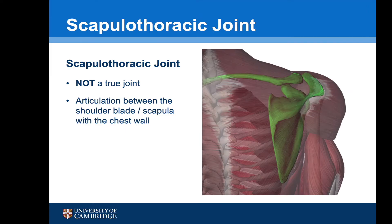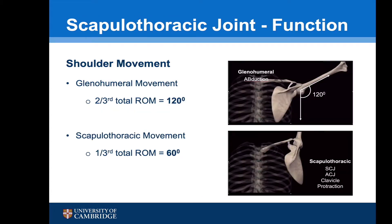The scapulothoracic joint is not a true joint but describes the articulation between the shoulder blade or scapula with the chest wall, and plays an integral part in total shoulder movement. In the normal situation, the glenohumeral joint accounts for about 120 degrees of shoulder movement, but the scapulothoracic joint is able to move the scapula and so the glenohumeral joint an additional 60 degrees.